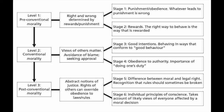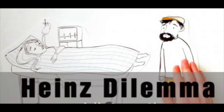Lawrence Kohlberg suggested that within these six stages corresponded with three levels of conventional morality, as seen here in the diagram. You can pause the podcast to look at the various stages of Kohlberg's work. Apart from his work on the developmental stages of moral reasoning, he is also famous for a fictional dilemma known as the Heinz Dilemma, which we will portray in the following animation.